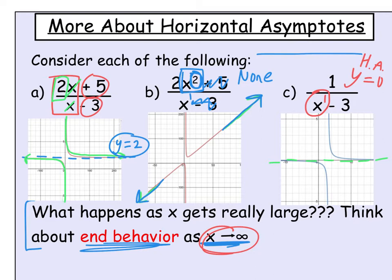To summarize the three cases: in example A the numerator and denominator degrees were equal, so the horizontal asymptote is at the ratio of 2 over 1. In example B the numerator's degree was higher, so there is no horizontal asymptote — the function approaches infinity. In example C the denominator had a higher degree, so the asymptote is at y equals zero.